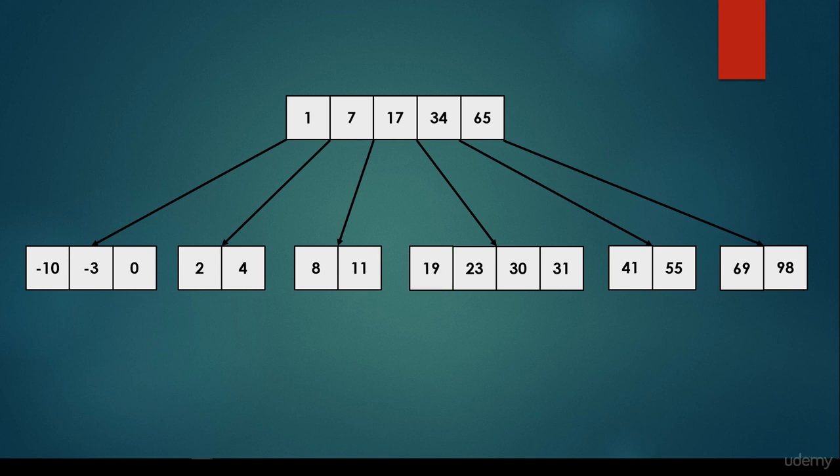What if we are looking for 65? We start at the root node's first item. 65 is greater than 1 so we keep considering the next item in this node. It's greater than 7, it's greater than 17, it's greater than 34, and it is basically the item we are looking for.